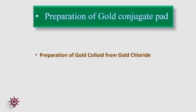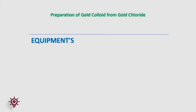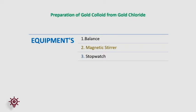One of the very important processes is the preparation of the gold conjugate pad. Two main steps are involved: first, preparation of gold colloids, and second, the gold conjugate process. Equipment required for the preparation of gold colloids are: weighing balance, magnetic stirrer, stopwatch, and spectrophotometer.